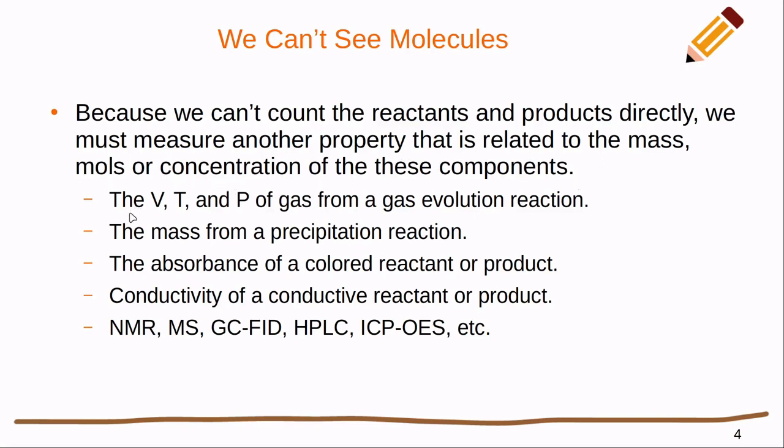A couple examples of this would be if we had a gas evolution reaction and we were able to measure the volume, temperature and pressure over time, then we could figure out how many moles of gas has been produced. We could measure the mass from a precipitation reaction and then if we knew the molar mass we'd be able to figure out how many moles of precipitant has been formed. If we had a colored reactant or product, we can measure the absorbance using spectrophotometry and relate that back to concentration. If the reactants or products are conductive, there's a whole bunch of other tools that we can use for this purpose.